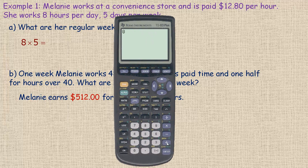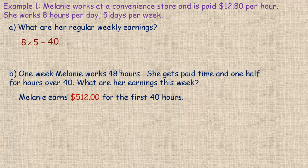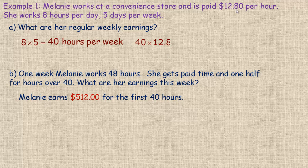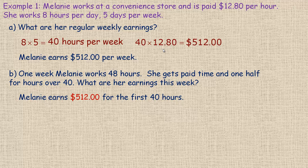She works eight hours for each of five days, so eight times five gives 40 hours per week. Each of those 40 hours she's being paid $12.80, so we multiply 40 by $12.80, which gives $512. When Melanie works 40 hours in a week, she is making $512.